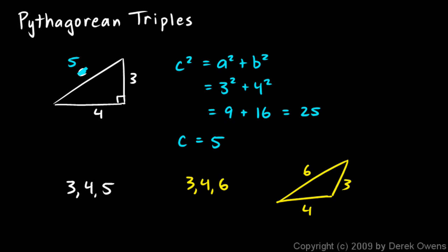And let's look at another example. Suppose we have a triangle like this, and we're told that it's a right triangle, and this side is length 6, and this side is length 8. Find the hypotenuse.